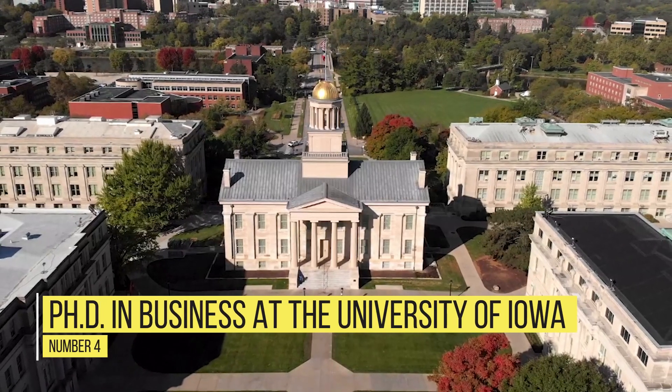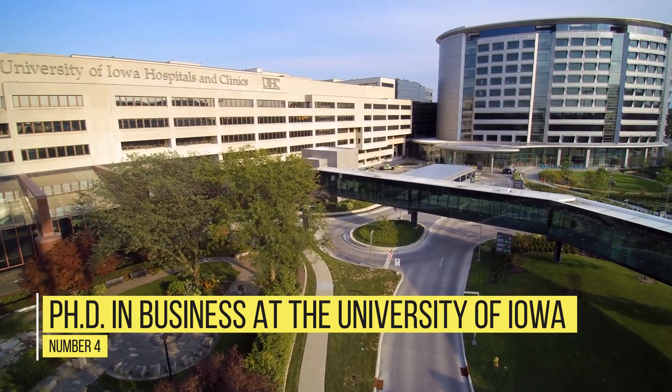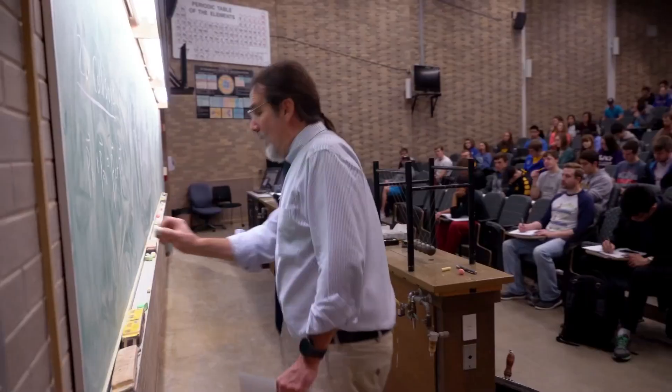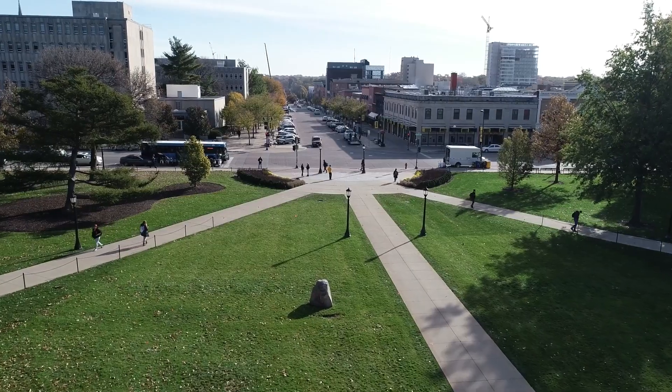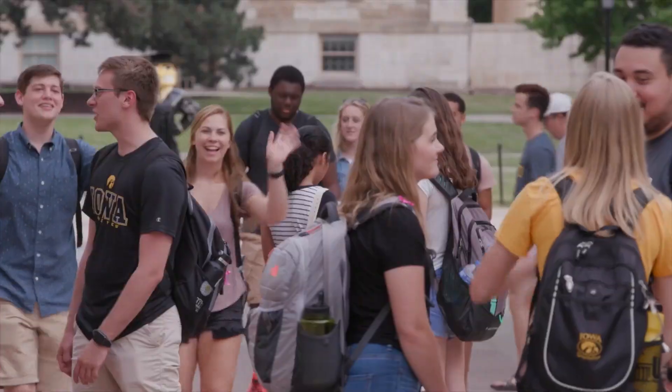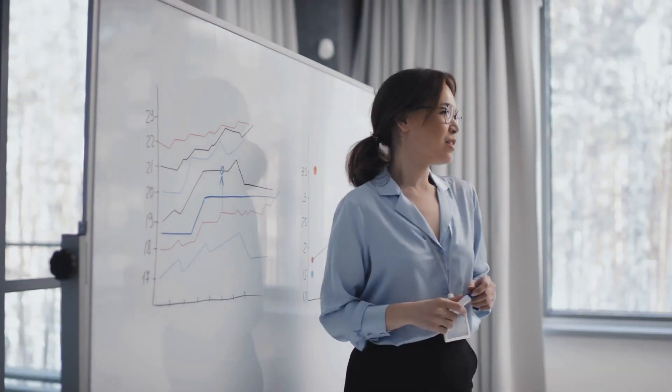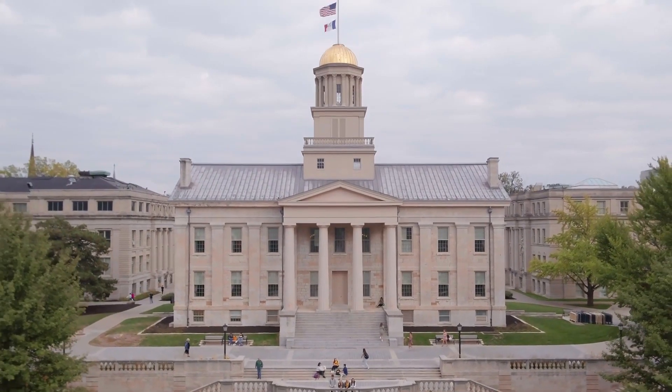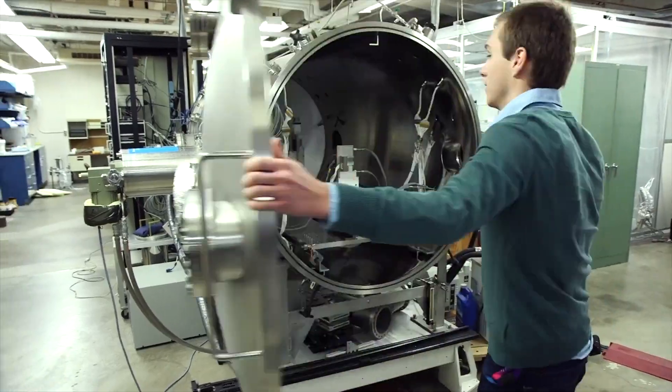Number 4: PhD in Business at the University of Iowa. The University of Iowa's Tippie College of Business offers PhD degrees which includes full tuition and fees, a minimum nine-month stipend of about $20,041, and comprehensive health insurance. Some departments also offer a fund for research presentations at major conferences, summer fellowships, additional departmental scholarships, and paid time off to pursue independent research.